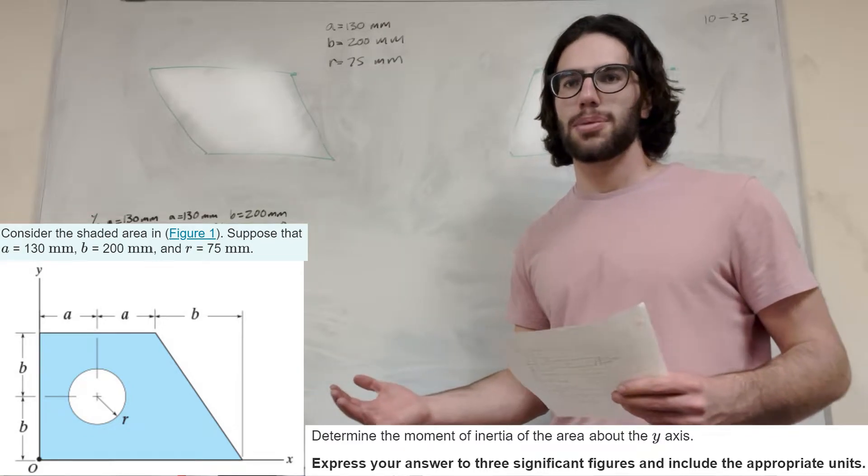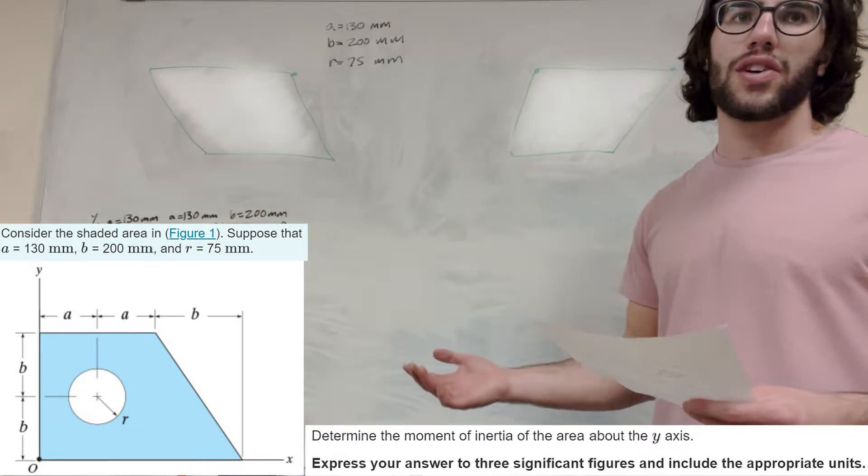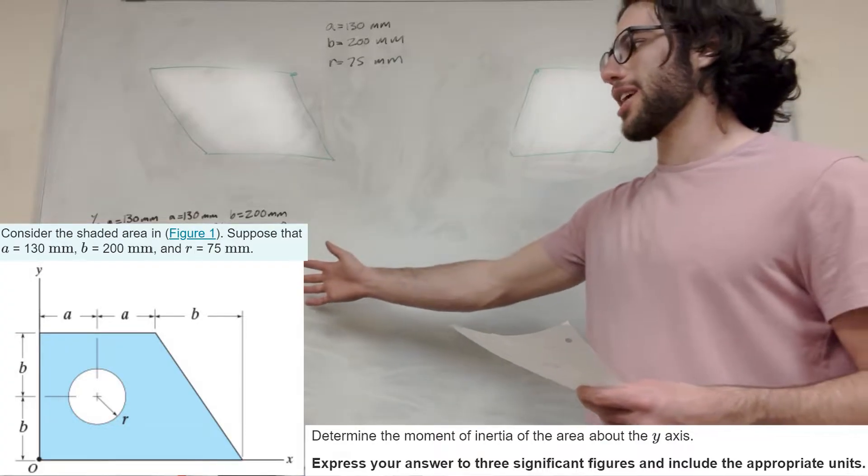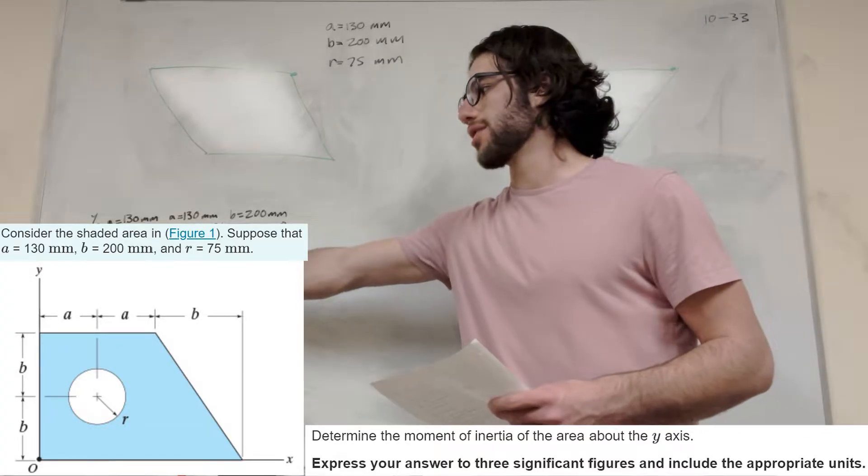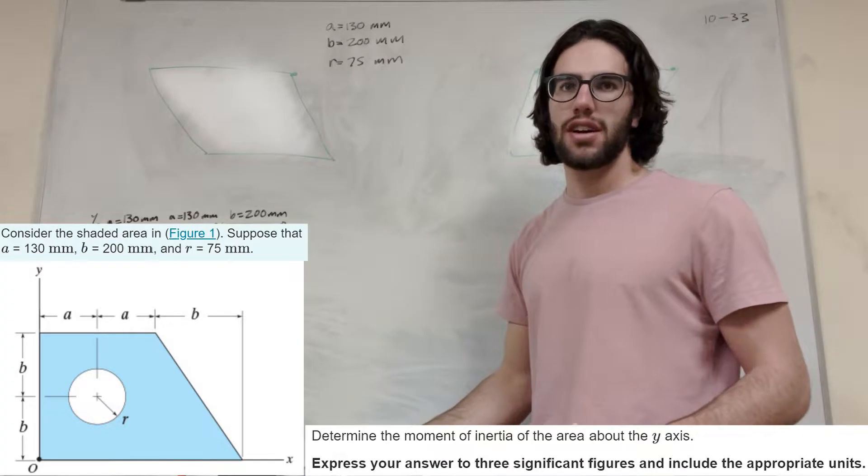What's up, Calv gang? Welcome back to the statics problem. What we're trying to find is the moment of inertia around the y-axis for this shape here. We have this shape, and then there's a circle cut out in the center, and let's just try to figure it out right now.